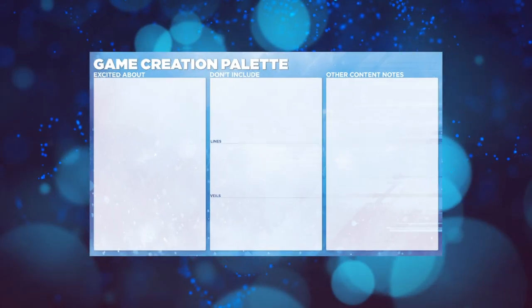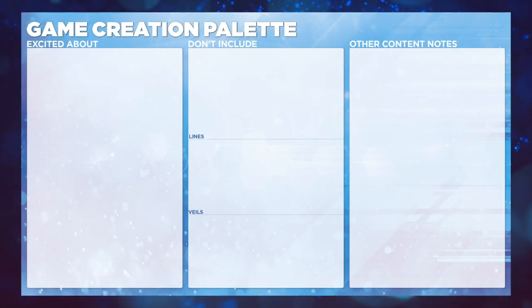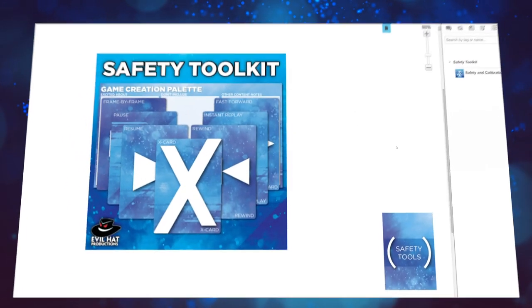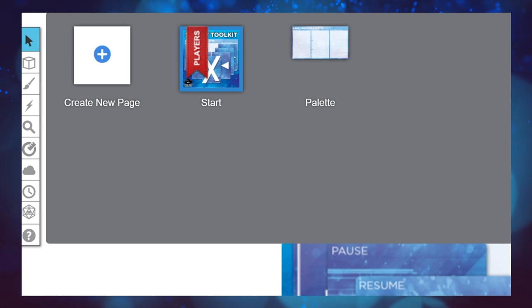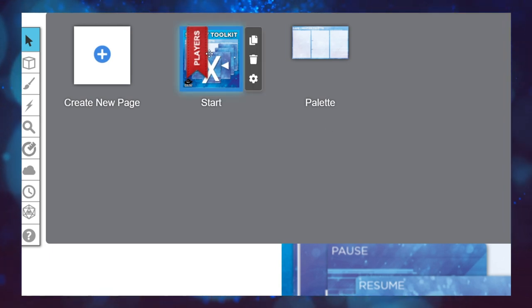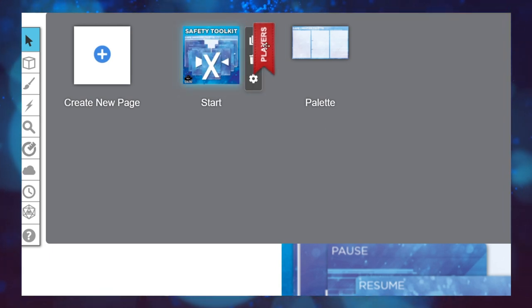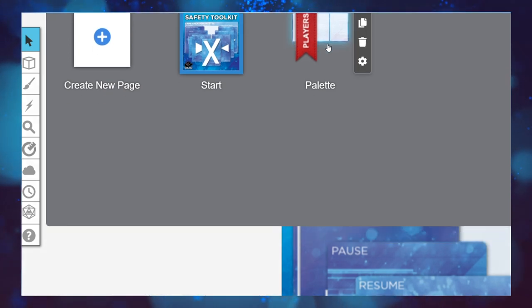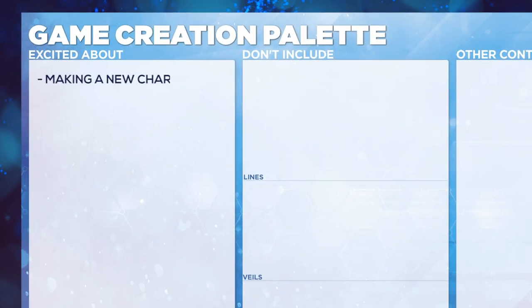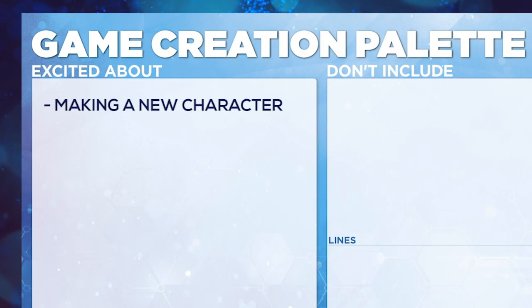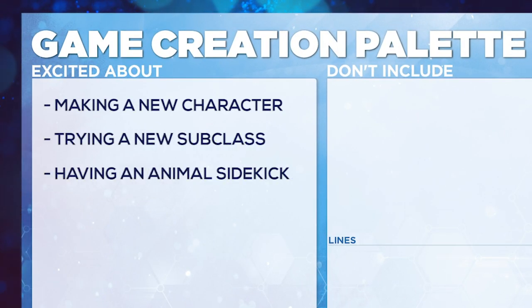Another great tool included in this add-on is the palette page. You can access it by clicking on the blue page toolbar at the top of the game screen. So both you and your players can see this page, drag the red players banner to the palette page, then click on the page. Here you'll find the game creation palette — a place where you and your group can list things you're excited about and things you'd prefer not to explore.